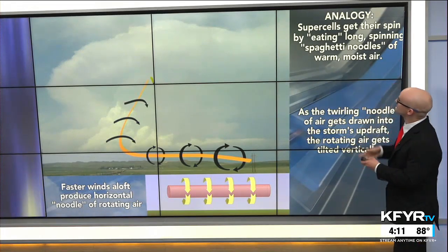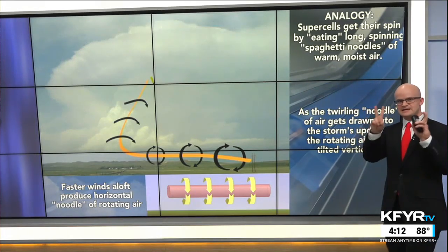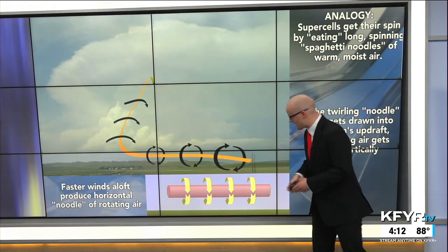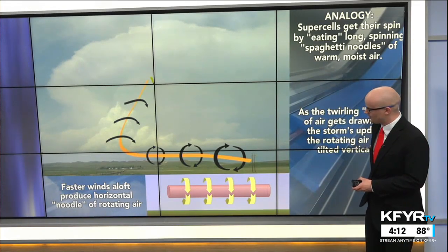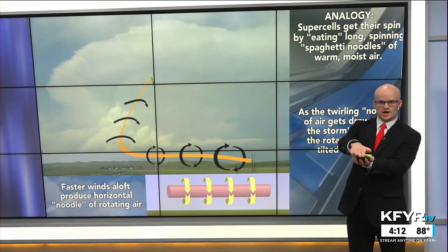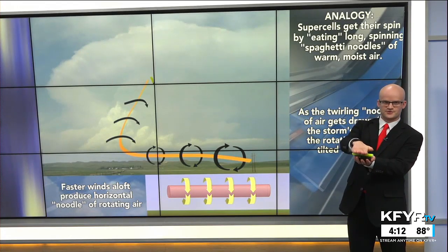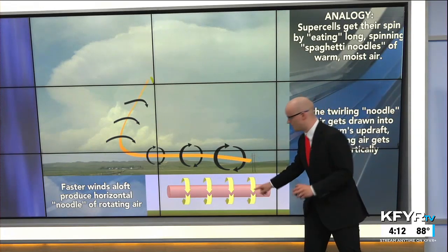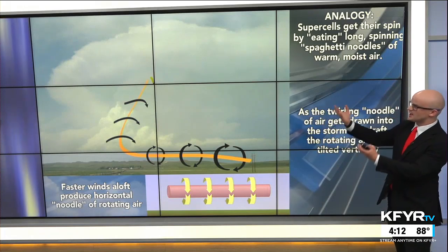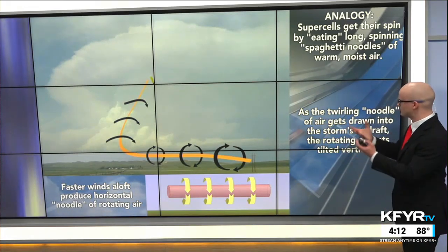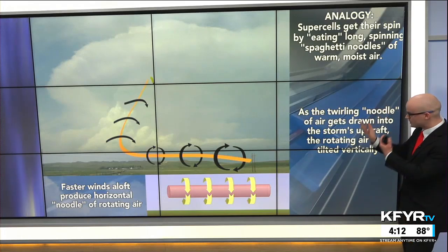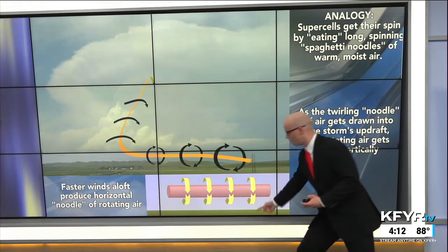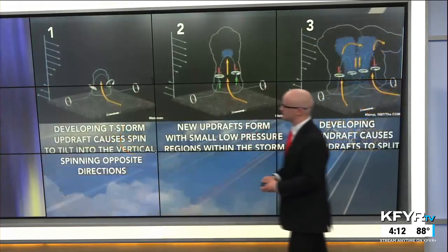An analogy for how supercells get their spin is that they eat long spinning spaghetti noodles of warm, moist air. Think of having a pen in your hand — the wind aloft is rotating faster than the wind at the surface, producing a horizontal noodle of rotating air that gets sucked into the thunderstorm cloud by the updraft. As that twirling noodle of air is drawn into the storm's updraft, the rotating air is tilted from the horizontal to the vertical, and that's where we get rotation within the storm.